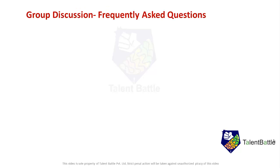Now let me start with the doubts students usually have about group discussion, starting from the very basic. Group discussion can be divided into three parts: the introduction, the middle part, and the conclusion. The first question: what is the normal duration of a GD? The normal duration is eight to ten minutes. It depends on the company's time requirement — they may go for 10 to 12 minutes if they have more time, or just five to six minutes if time is limited. The normal duration is 10 minutes.